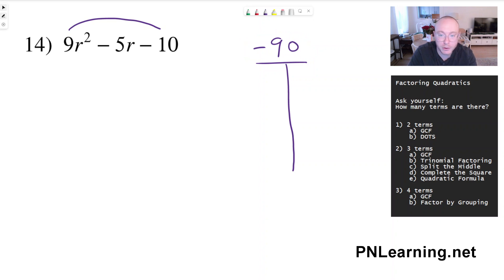So let's see factors of 90 that have a difference of five. So 1 and 90, 2 and 45, 3 and 30,